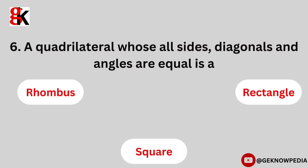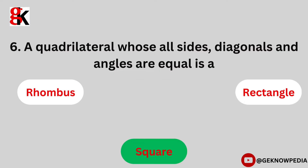Sixth question. A quadrilateral whose all sides, diagonals and angles are equal is: a rhombus, rectangle, square. The correct answer is square.